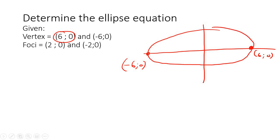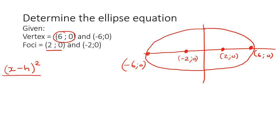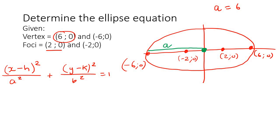Let's draw a diagram. We also know the foci are at (2, 0) and (-2, 0). Now we need the equation. Because x is the bigger one and it's on the horizontal axis, we know that a squared is going to be under the x term. The length from the center to the vertex is a, so a equals 6, meaning a squared equals 36. Since the center is at the origin, h and k are both 0, so x minus 0 is just x, and y minus 0 is just y.